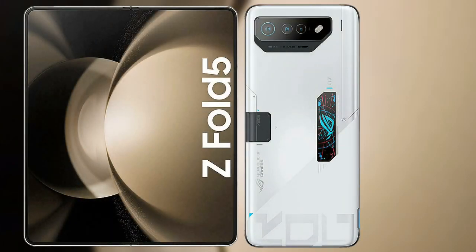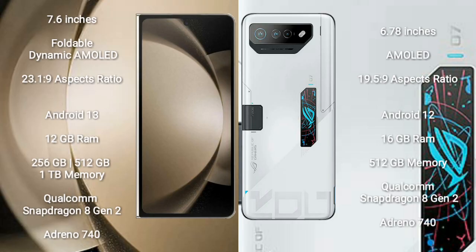I will compare the new Samsung Galaxy Z Fold 5 with the Asus ROG Phone 7 Ultimate. The Samsung Galaxy Z Fold 5 comes with a 7.6-inch Dynamic AMOLED display and an aspect ratio of 23.1:9. The Asus ROG Phone 7 Ultimate has a 6.78-inch AMOLED display and an aspect ratio of 19.5:9.